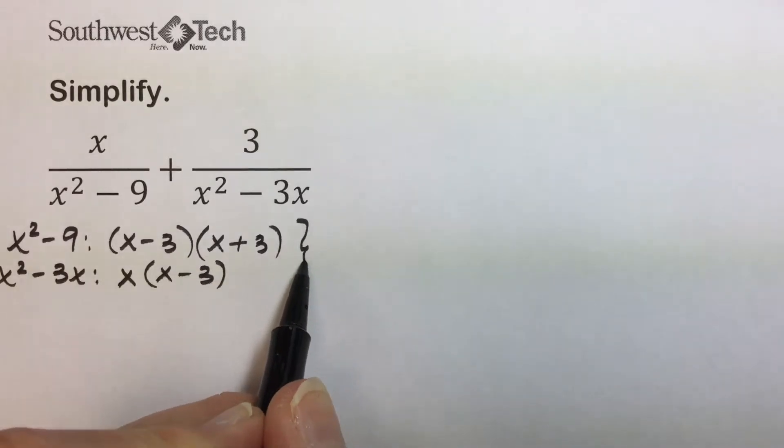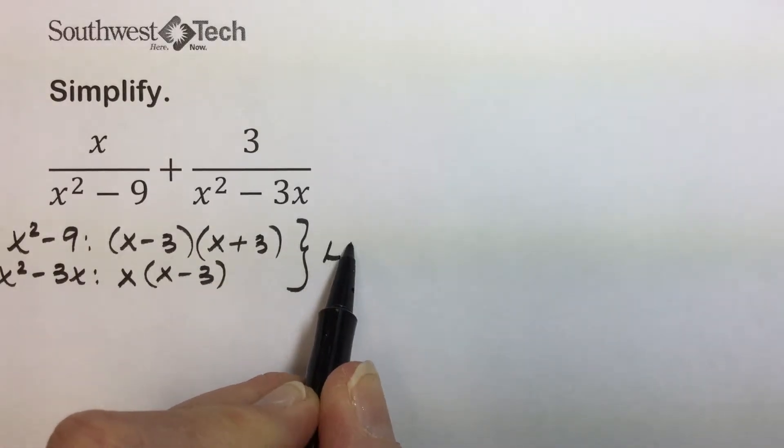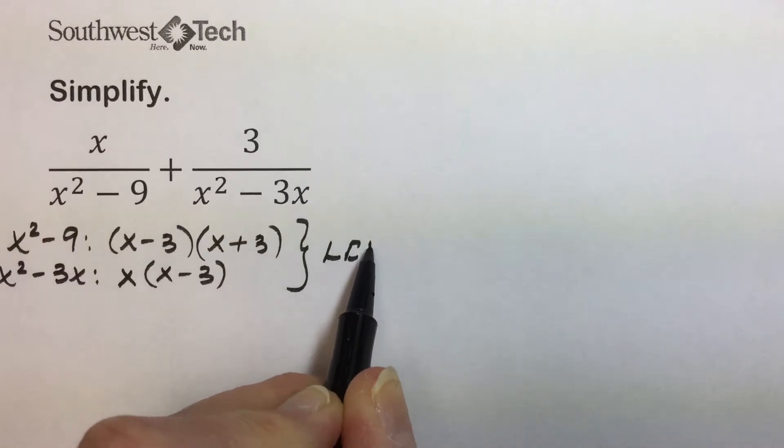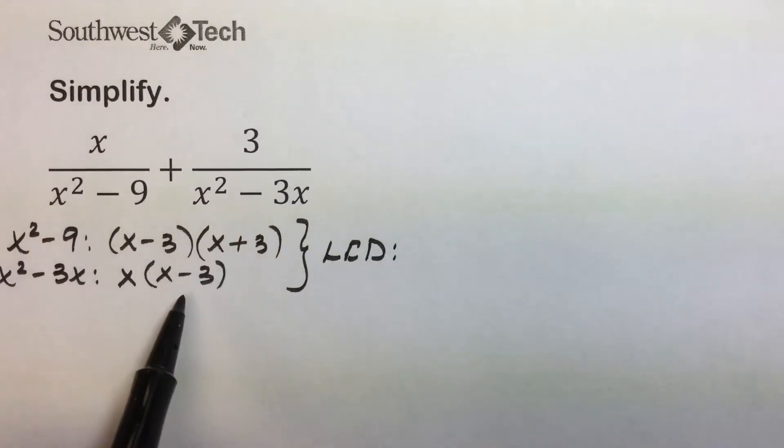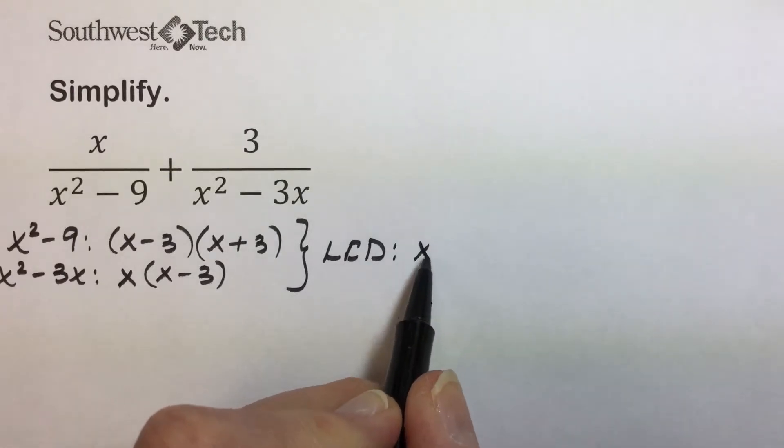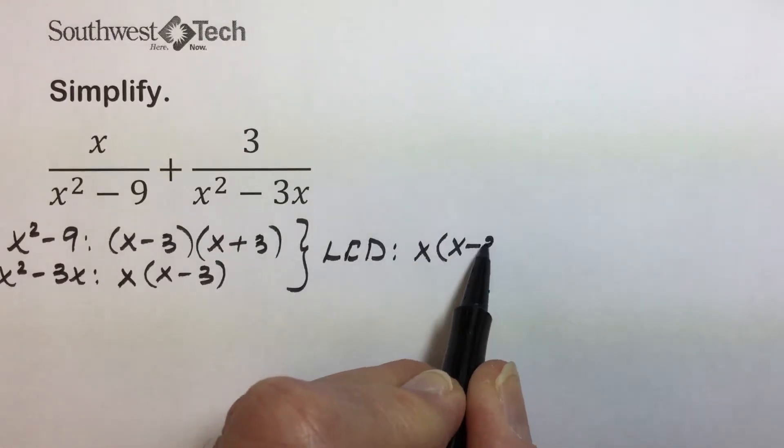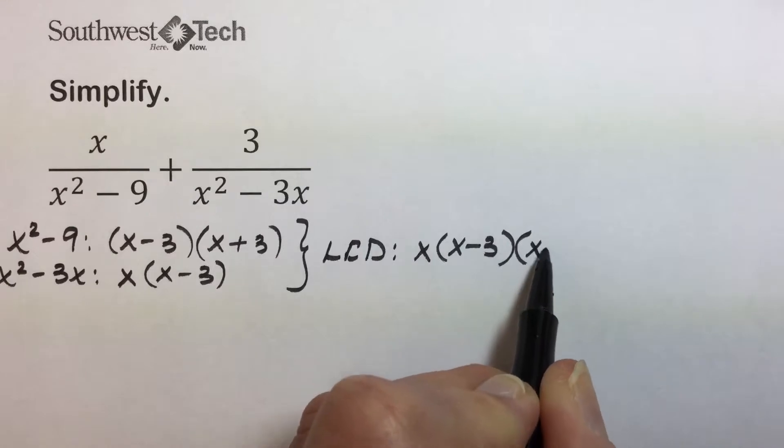The least common denominator of these two denominators has to have an x, a factor of x minus 3, and a factor of x plus 3.